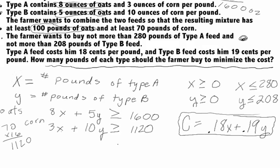Now we'll sketch a graph for all of these inequalities, find the region that satisfies all constraints, identify the vertices of that feasible region, and plug them into our cost function to find the minimum.